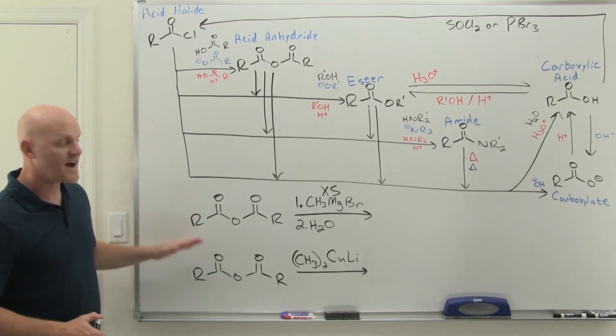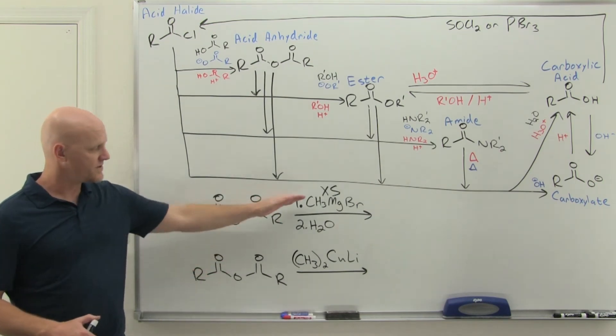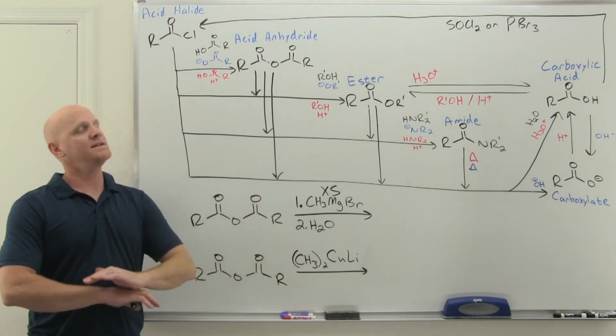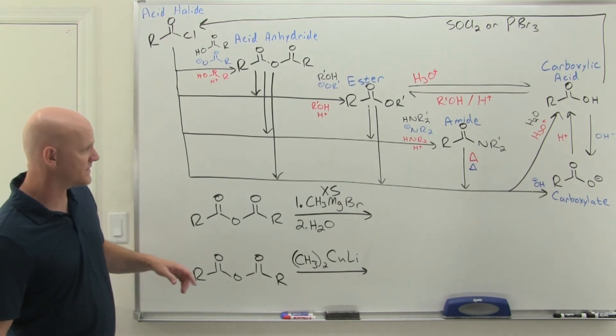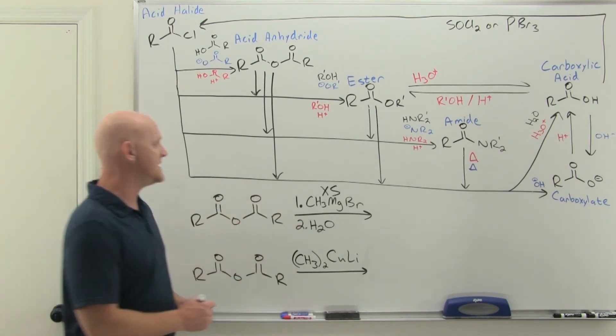The reactions of an acid anhydride with the organometallics, the Grignard or the organocuprates, are identical or essentially analogous to what we saw with the acyl halides as well. In this case, if you use a Grignard, you're going to use excess and the first equivalent...